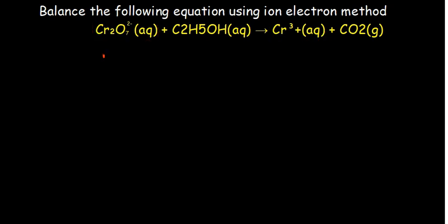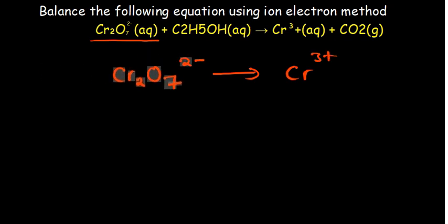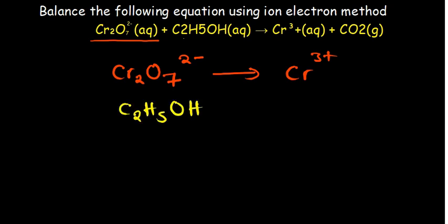We start with the chromium part. The first half reaction is: Cr2O7²⁻ gives us Cr³⁺. The second half reaction is the alcohol part — ethanol, C2H5OH, is related to carbon dioxide because of the common carbon. Notice that we pay particular attention to the charges in each half reaction.